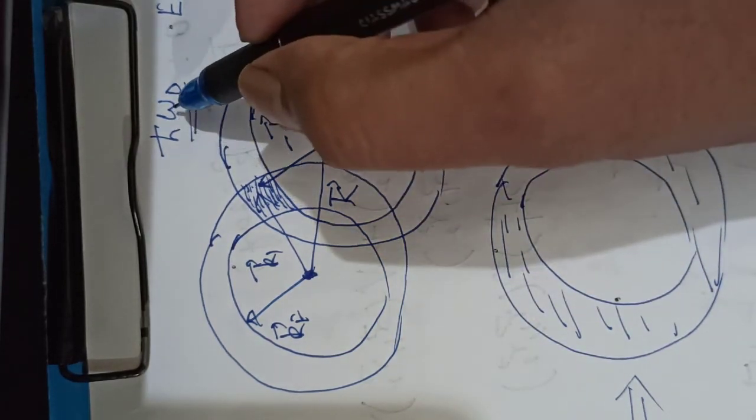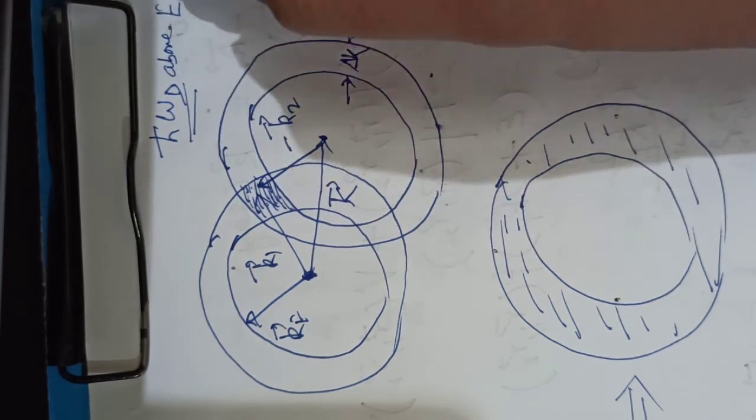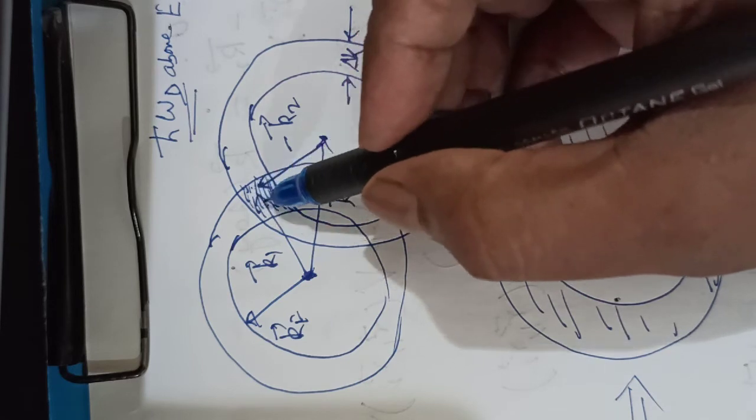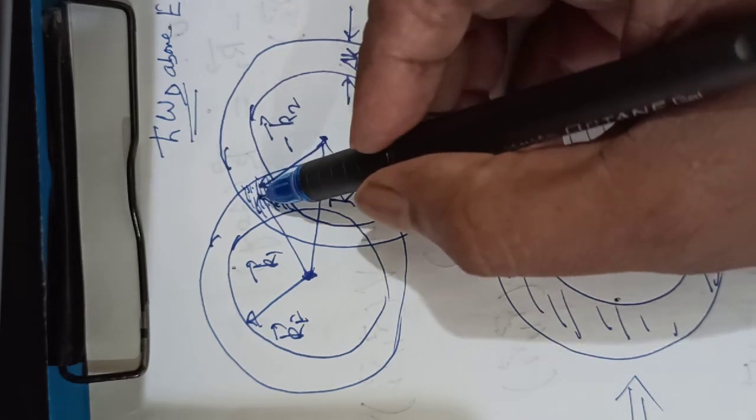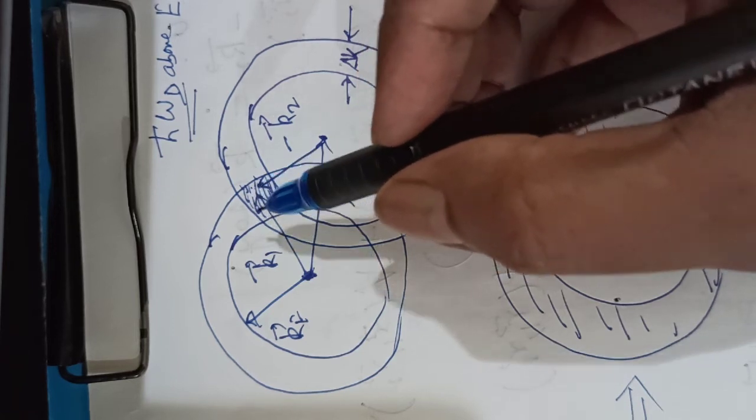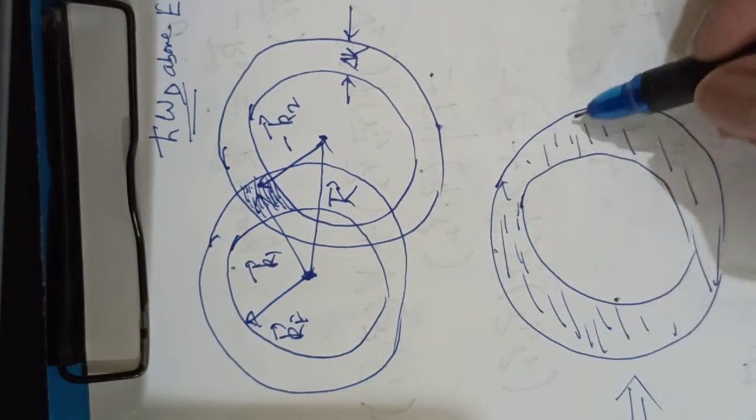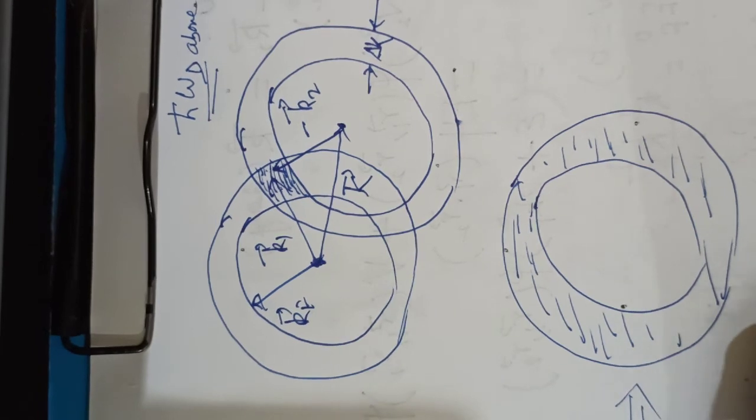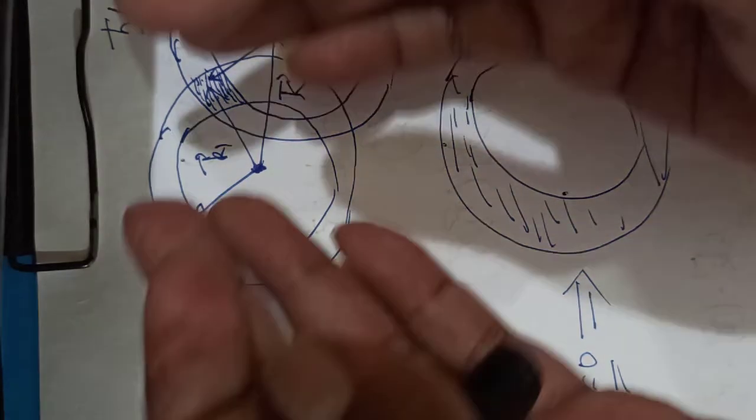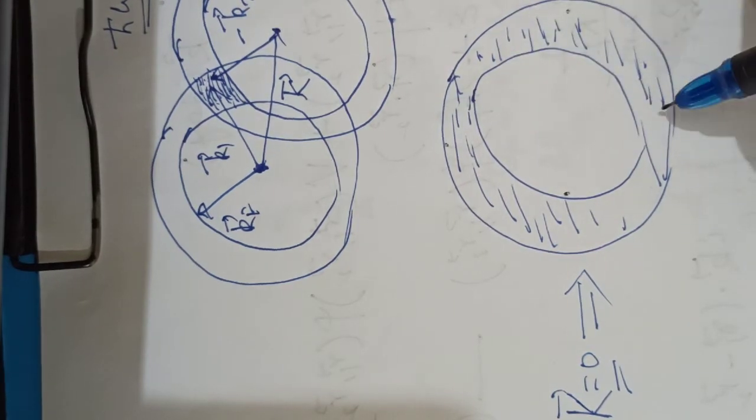As already mentioned, since the interaction in k-space is restricted to a shell with an energy thickness of ℏωD, where ωD stands for Debye frequency, above EF0, the possible k states are given by the shaded area. Now this area, and therefore the number of energy reducing phonon exchange processes, that is the strength of the attractive interaction, is maximum for k = 0.